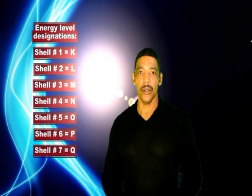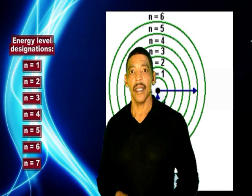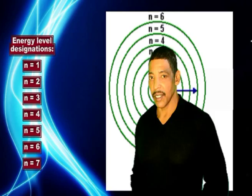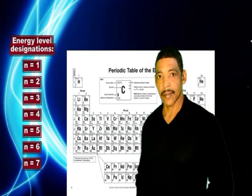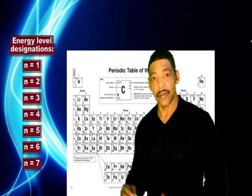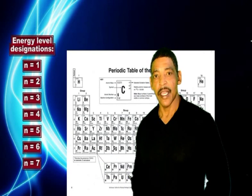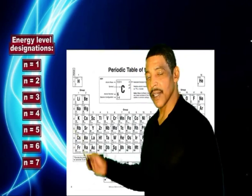If numbers are being used, then shell number one is designated as N equals one and is representative of the elements found in period one. For shell number five in a larger atom, we say N equals five, and this is representative of the atoms found in period five.